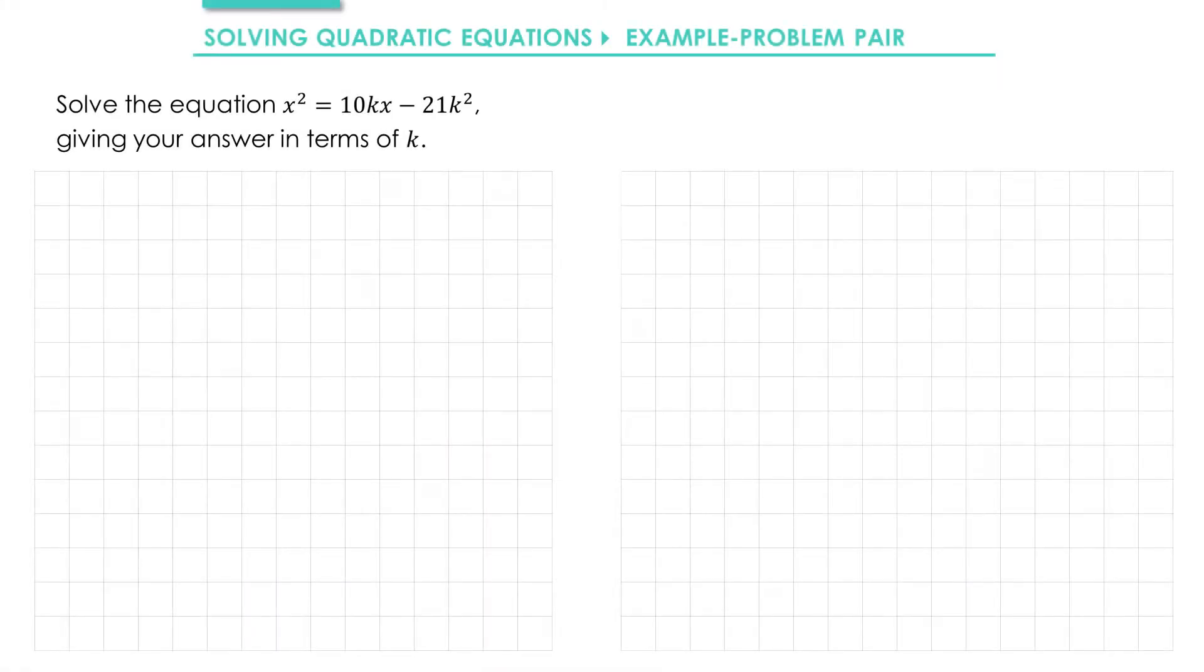Hi, in this example we're going to be solving a quadratic equation using the quadratic formula. We can't use our calculator for this one because we don't have numeric values for a, b and c. And so this is an example of why it's important that you still need to be able to apply the quadratic formula and you can't always rely on your calculator.